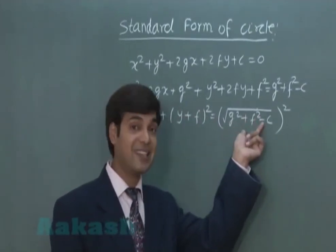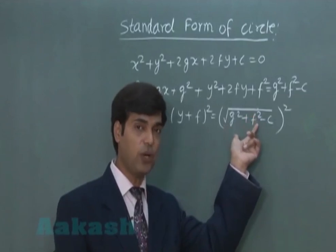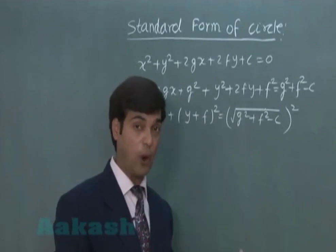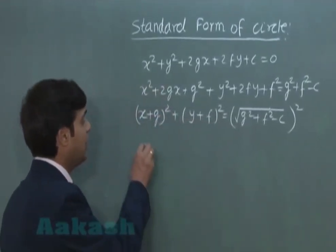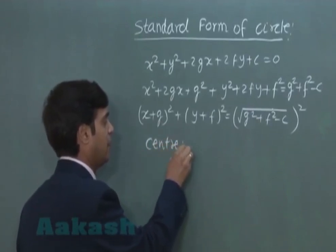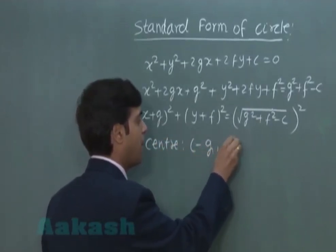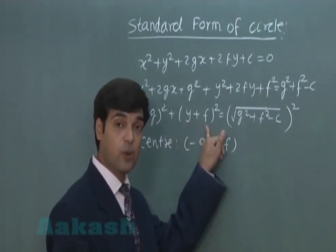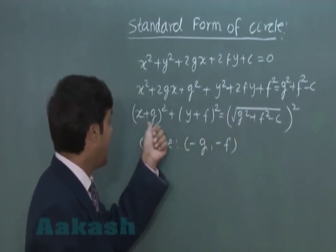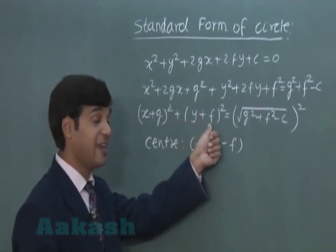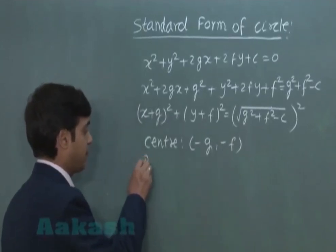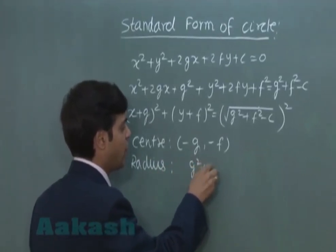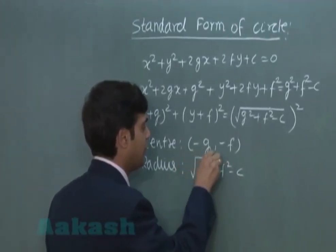This represents the equation of a circle when g square plus f square minus c is greater than or equal to 0. When it equals 0, this equation reduces to a point — we call it a point circle. Comparing with x minus h whole square plus y minus k whole square equals r square, the center is minus g, minus f, and the radius is the square root of g square plus f square minus c.